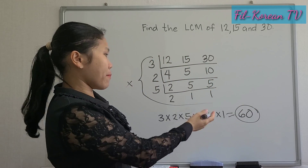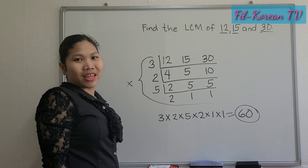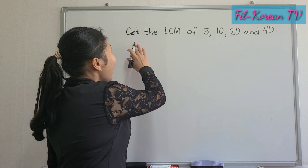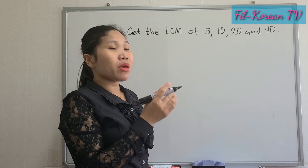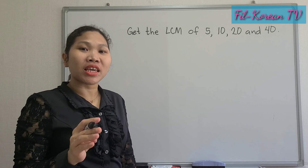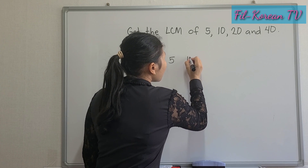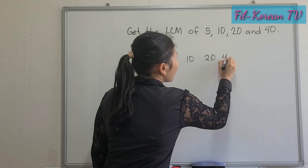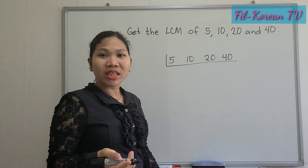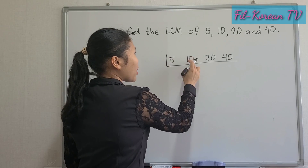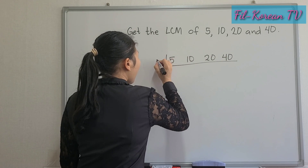So the LCM of 12, 15, and 30 is 60. Last example: get the LCM of 5, 10, 20, and 40. We will get the LCM of these 4 numbers using the continuous division method. So we write 5, 10, 20, 40. Let's divide these numbers by their prime factor. We can apply the divisibility rule. 5 can be divided by 5, and the three other numbers end in 0, so they are also divisible by 5.